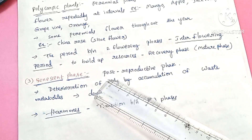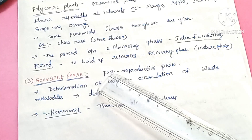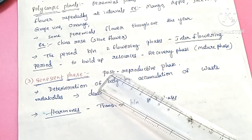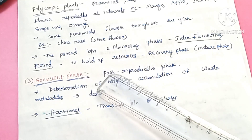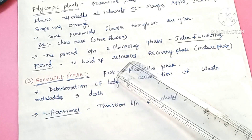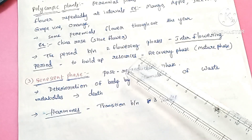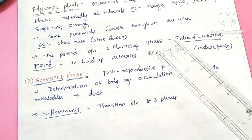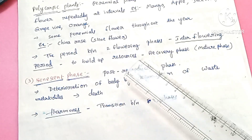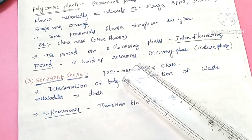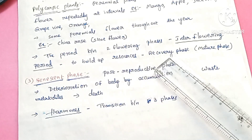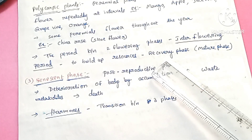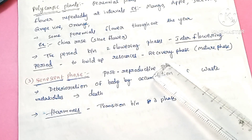The inter-flowering period is a gap used for building up resources and energy for the next flowering. This gap is only a recovery phase, not a juvenile phase.